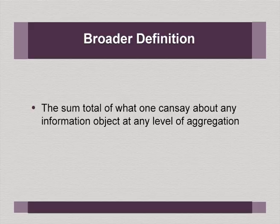So a broader definition of metadata is the sum total of what one can say about any information object at any level of aggregation. When it comes to metadata description, we talk about granularity, which is a technical term. More granular means you are giving very detailed information. Less granular means you are giving broadly a definition. In that sense, MARC 21 or MARC XML is highly granular, whereas Dublin Core is less granular.